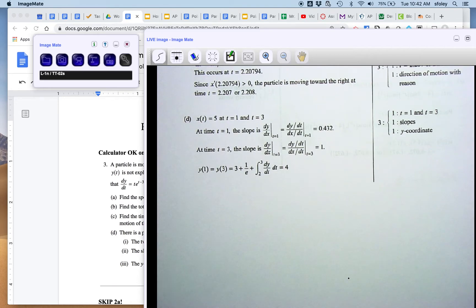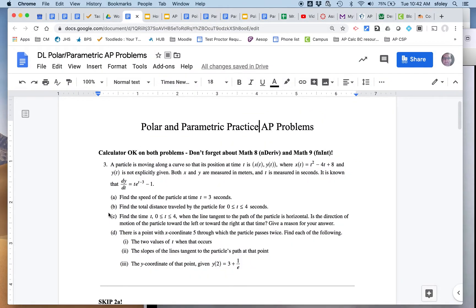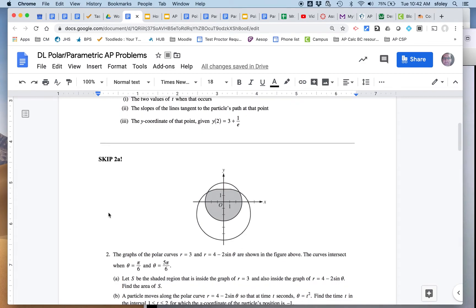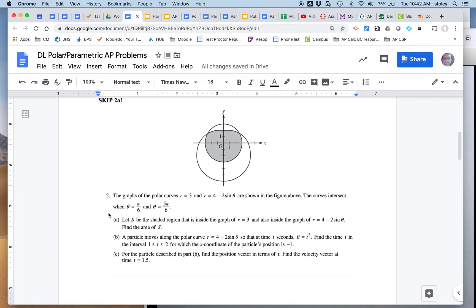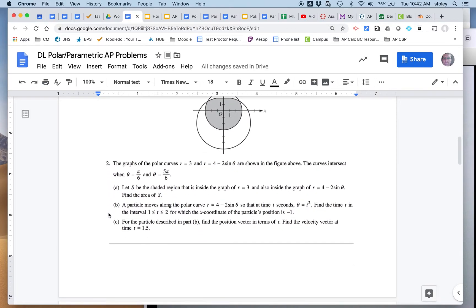So that's the first one. Hopefully that one went okay. Next one, we're skipping 2a because we are omitting polar area. It's not on the AP test, of course. Part B, a particle moves along the curve, and it's a polar curve.